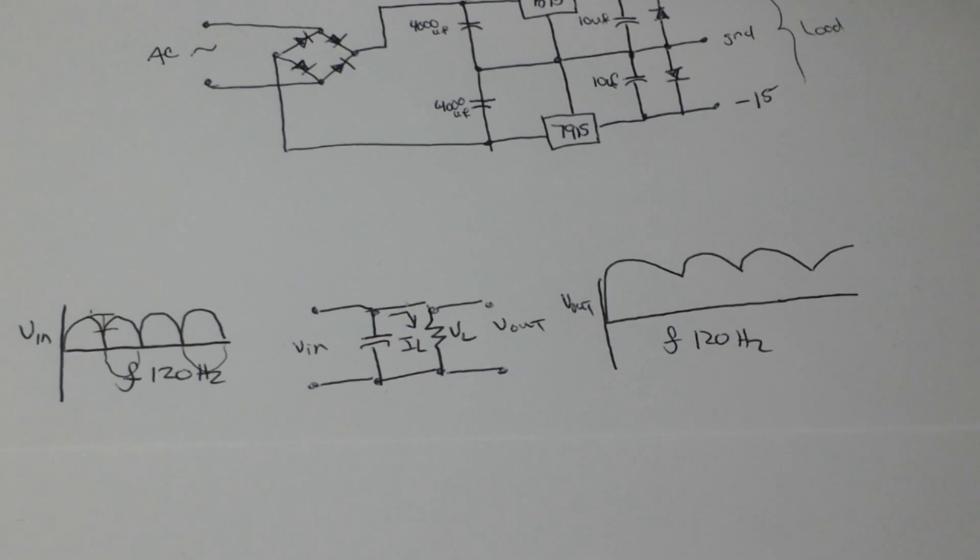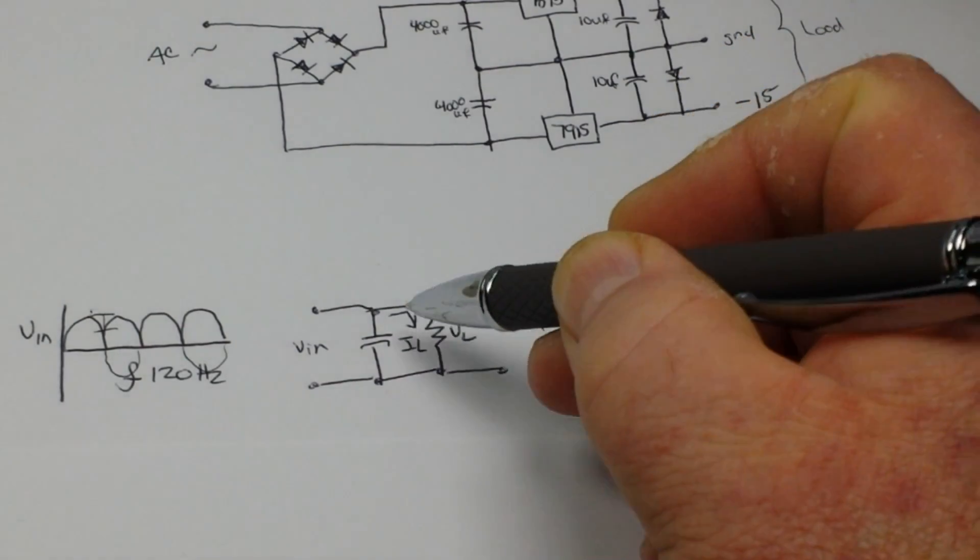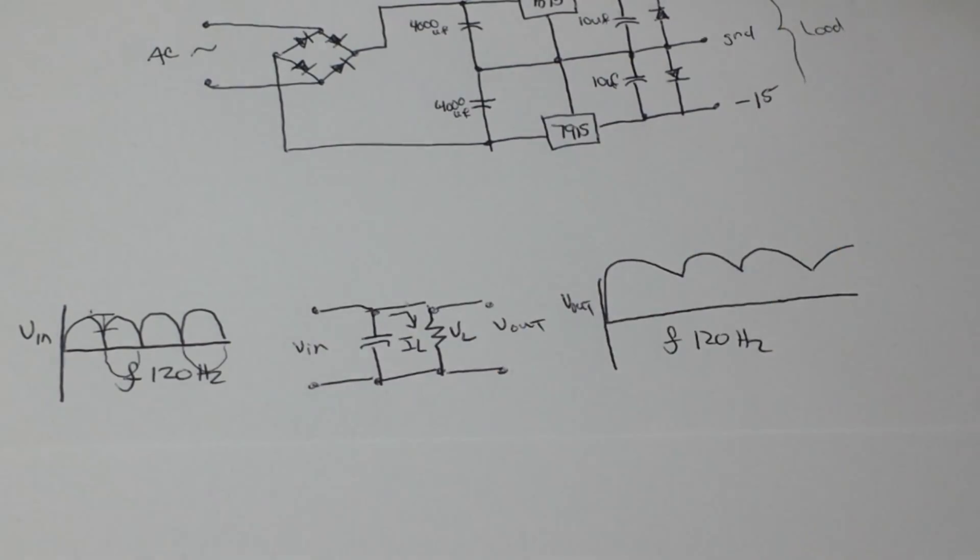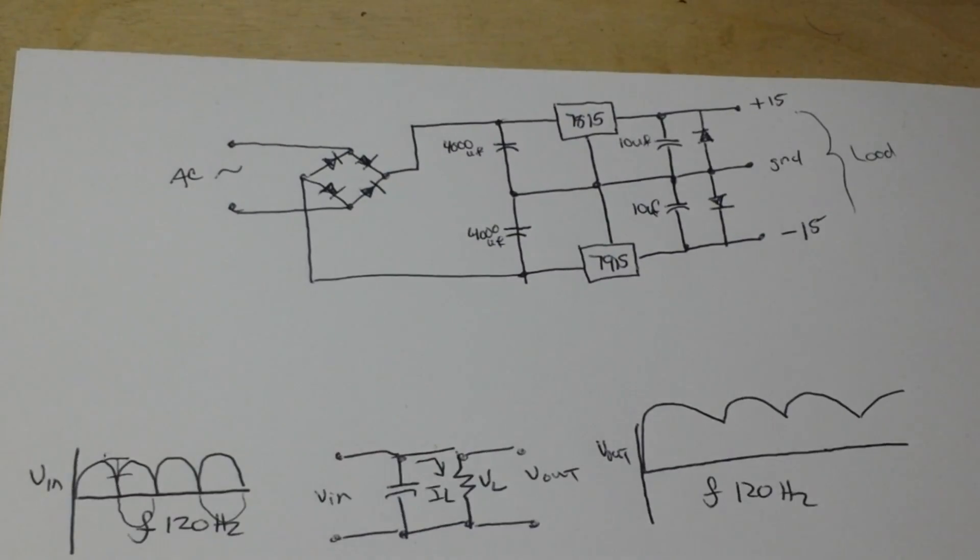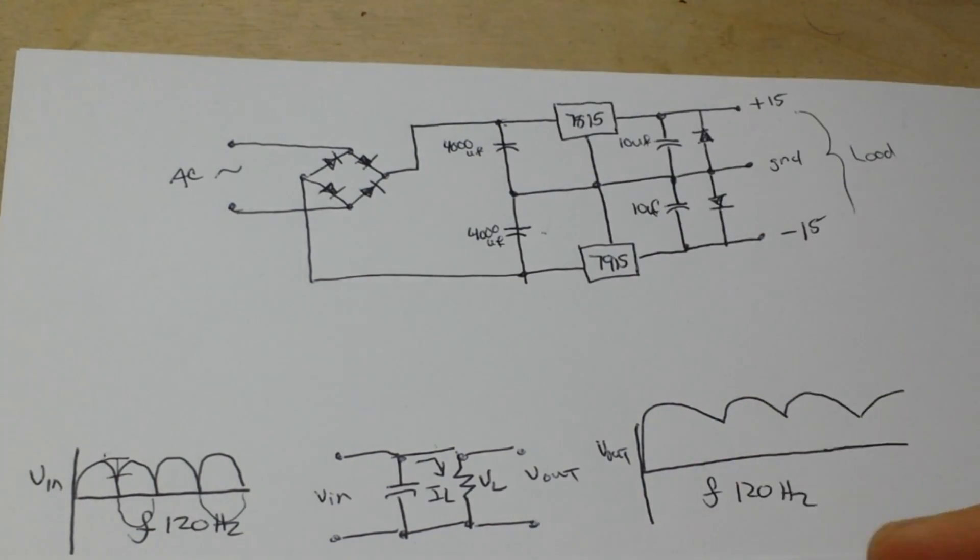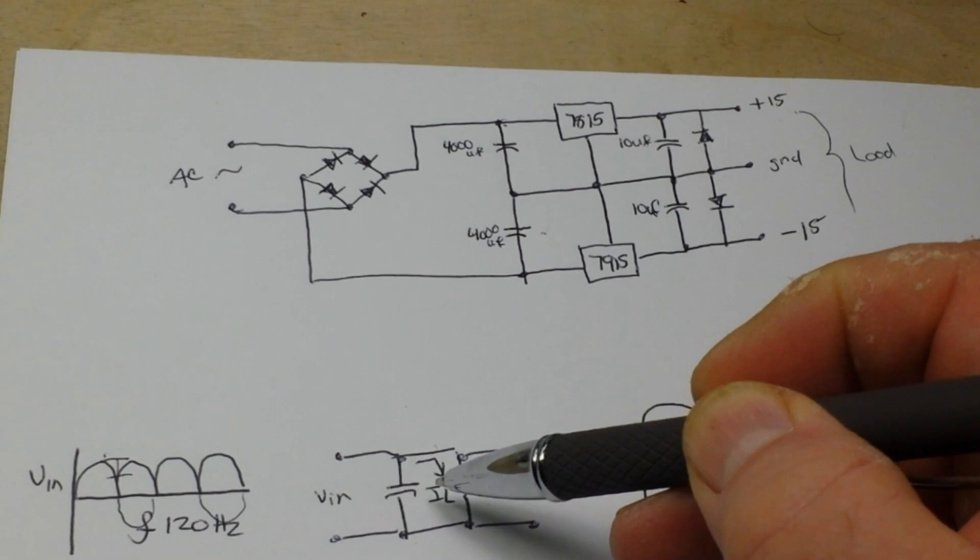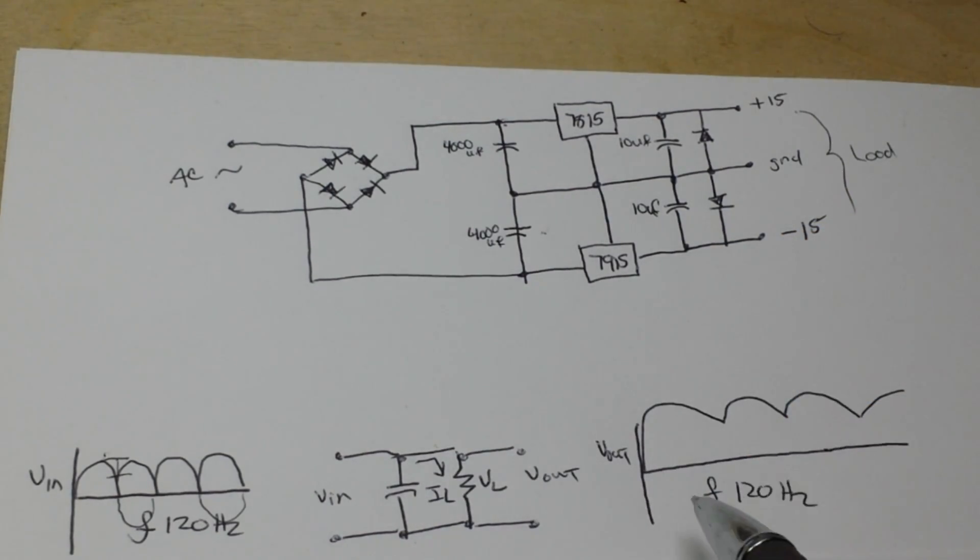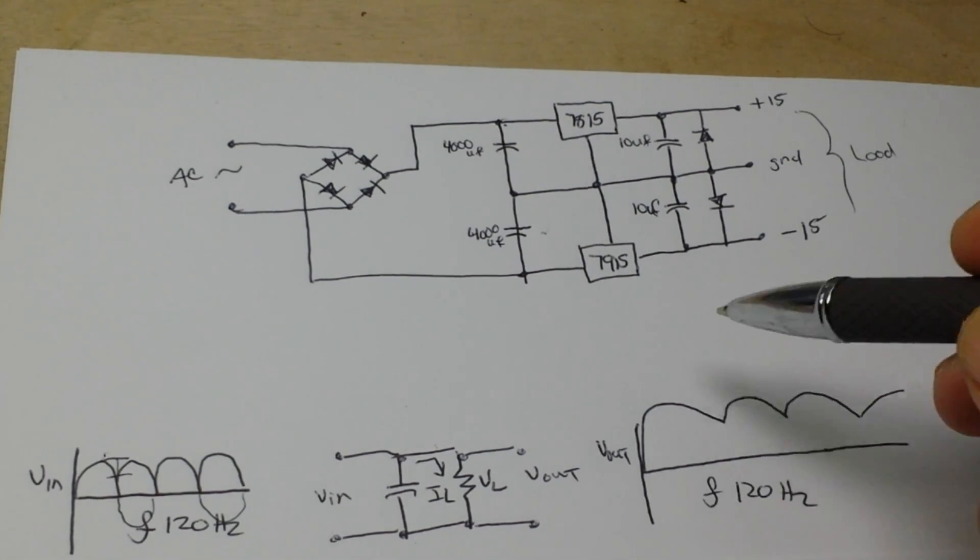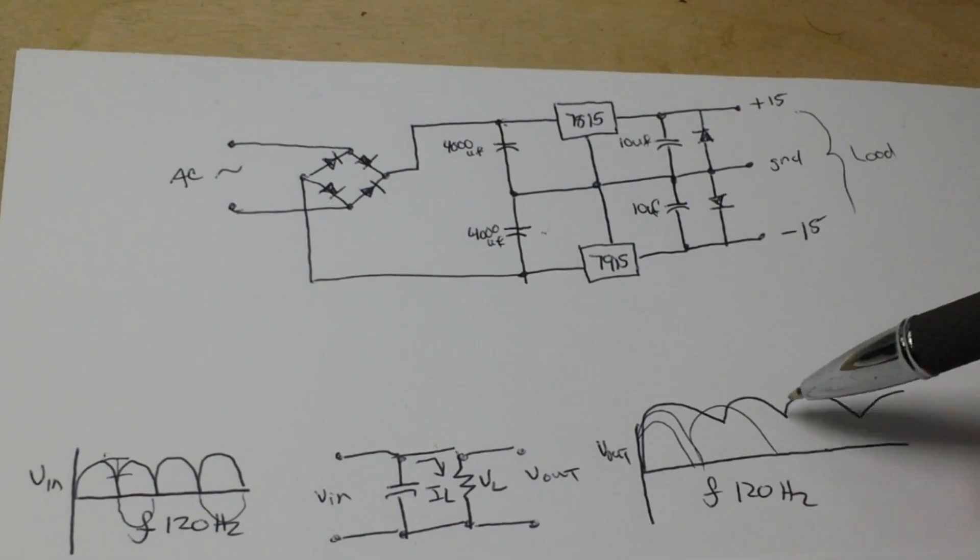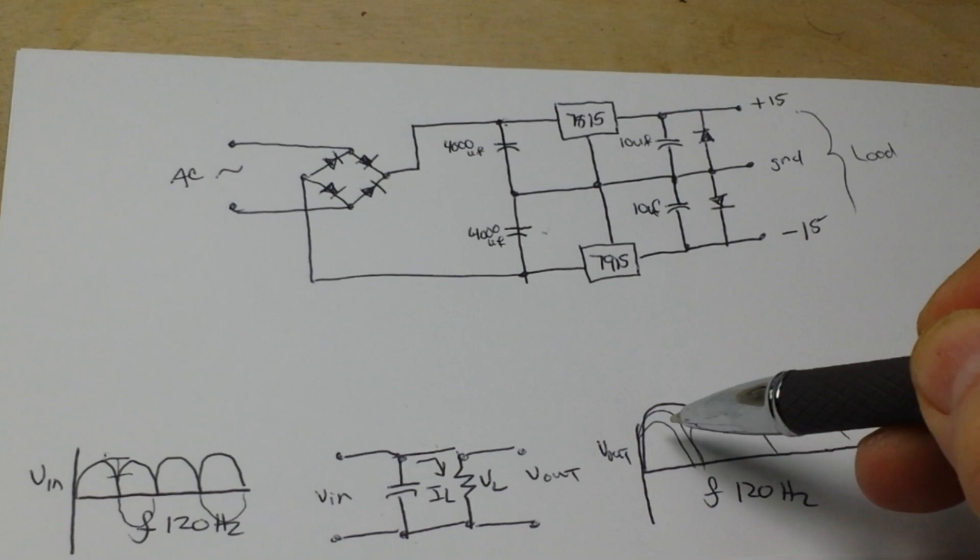Here's our filter capacitor. Imagine this is our V-in here. This will correspond to what's on the other side of these right here. There's our filter capacitor, there's our current, and there's our load. So this is what it is looking like after the filter capacitor.